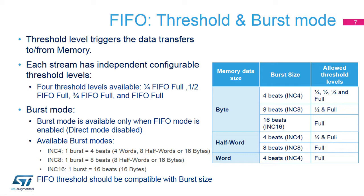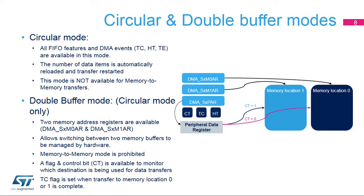DMA controllers support circular mode, allowing you to configure the number of data items to transfer once and automatically restart the transfer after a transfer-complete event. Double buffer mode is only available in circular mode. It allows you to switch automatically by hardware between two memory addresses each time a transfer-complete event occurs. In double buffer mode, a status flag and control bit, or CT, is available to monitor which destination is being used for data transfers.